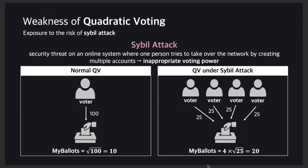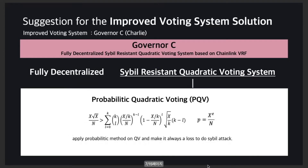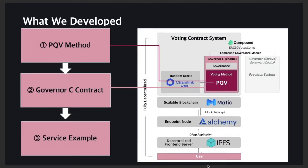So, our team would like to suggest an improved voting system, Governor C, which is a fully decentralized sybil-resistant quadratic voting system based on Chainlink VRF. To make a sybil-resistant quadratic voting system, we suggest a new voting method: Probabilistic Quadratic Voting, or PQV. We developed three things. First, the PQV method to improve quadratic voting.